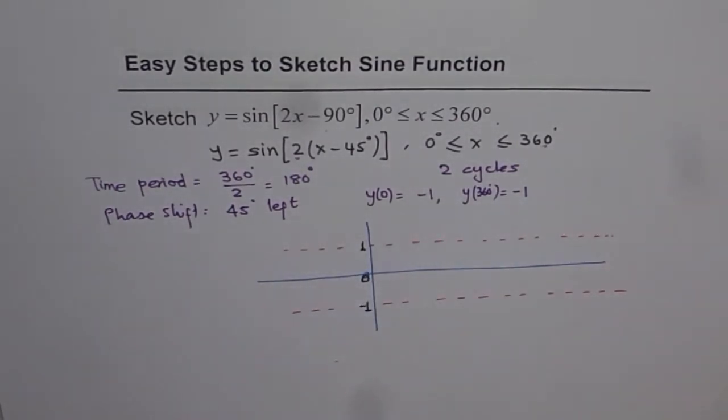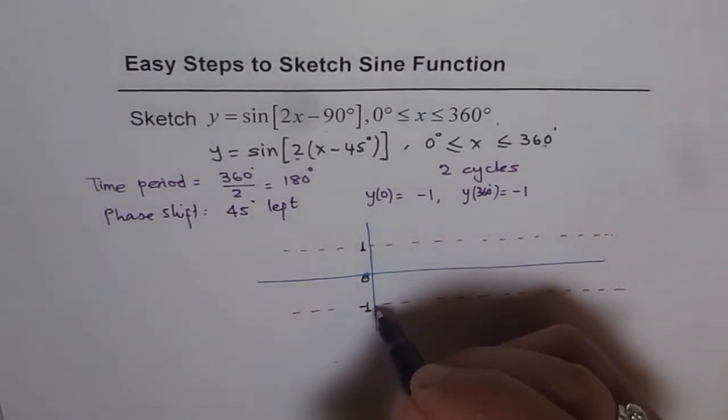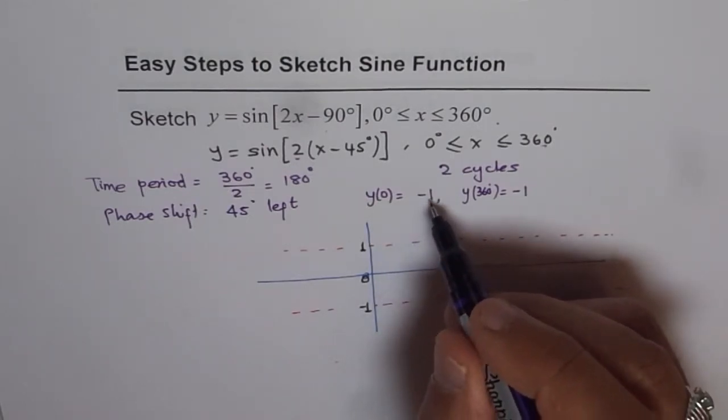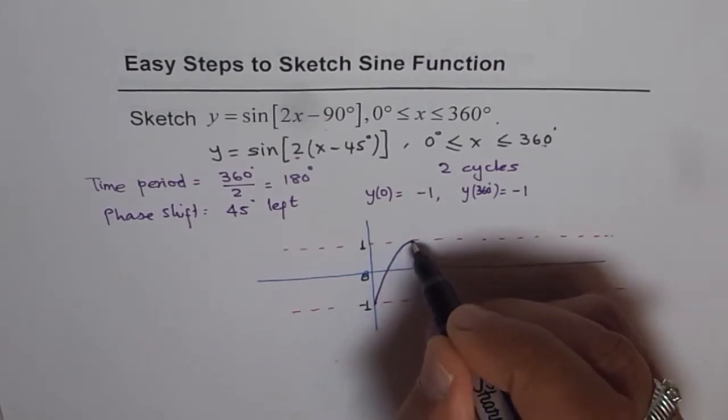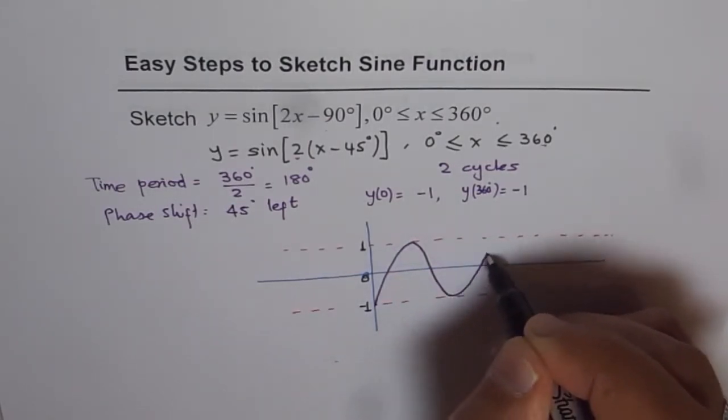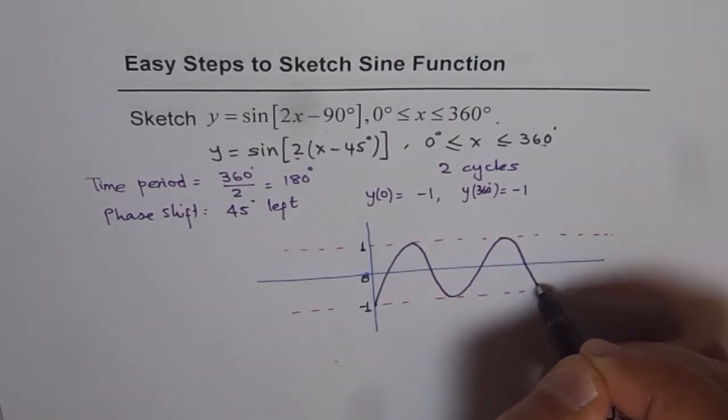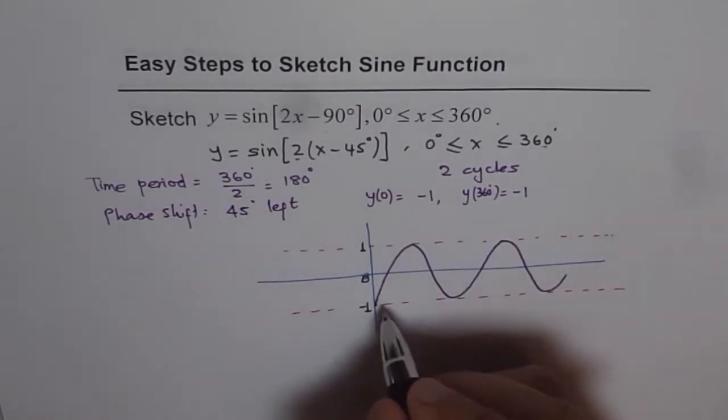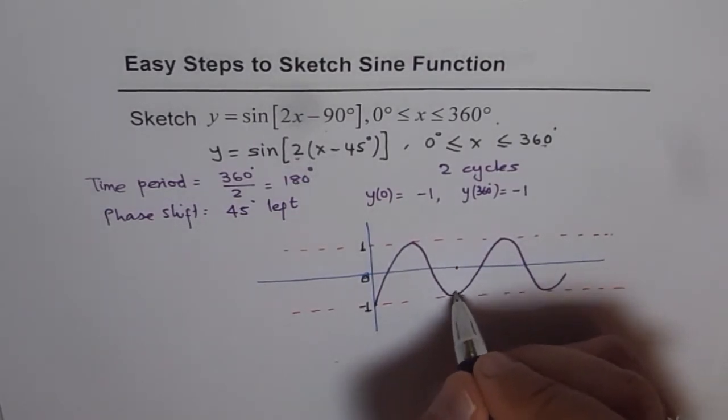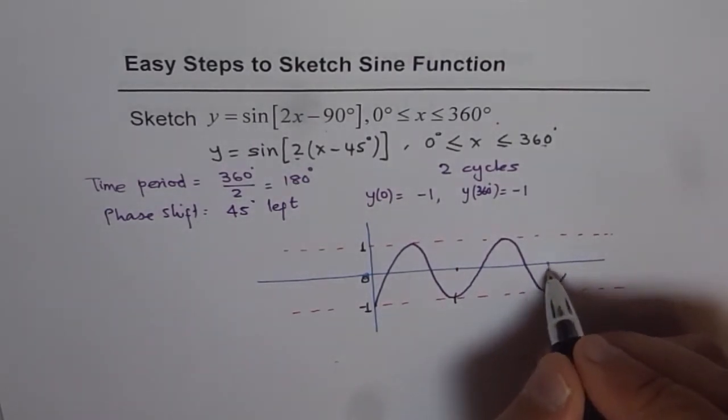And within this, we have 2 sine waves. Our sine waves start with minus 1. So it's a good idea to draw sine waves here. I'm drawing sine waves starting with minus 1 because I know at 0 it is minus 1. So let me just sketch sine waves. So I already have 2. This is the first sine wave ending here. This is the second sine wave ending here.